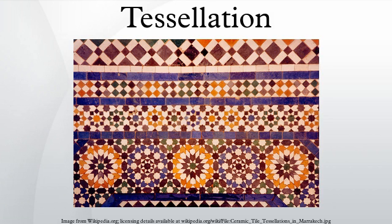Other methods also exist for describing polygonal tilings. When the tessellation is made of regular polygons, the most common notation is the vertex configuration, which is simply a list of the number of sides of the polygons around a vertex. The square tiling has a vertex configuration of 4.4.4.4, or 4⁴. The tiling of regular hexagons is noted 6.6.6, or 6³.